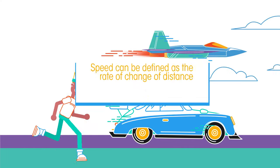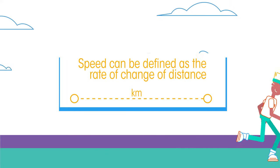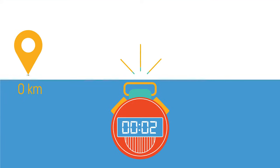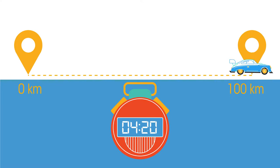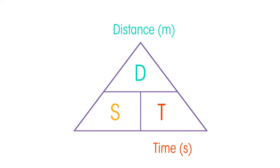Speed can be defined as the rate of change of distance. What exactly does that mean? Well, it means that an object's speed is a measure of how long it takes, in terms of time, for it to travel a given distance. From this we get the following equation: speed equals distance divided by time. The standard unit of distance is meters and time is seconds, so speed is measured in distance per time.